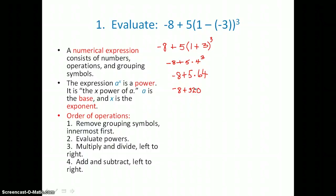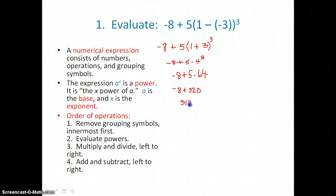The last step is step 4: add and subtract working left to right. We're going to add negative 8 to positive 320. We have more positives than negatives, so we get positive 312 as our answer. Because of the order of operations, we're all going to get the same result.